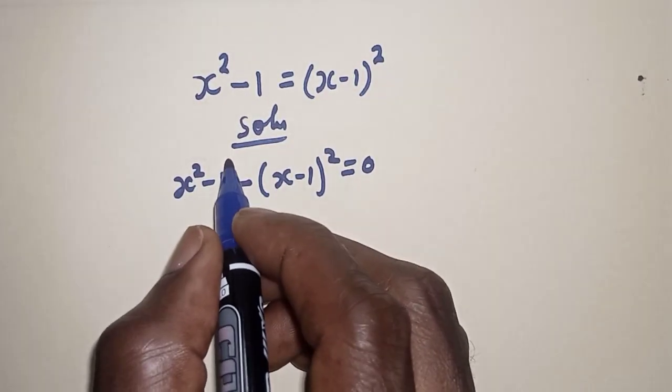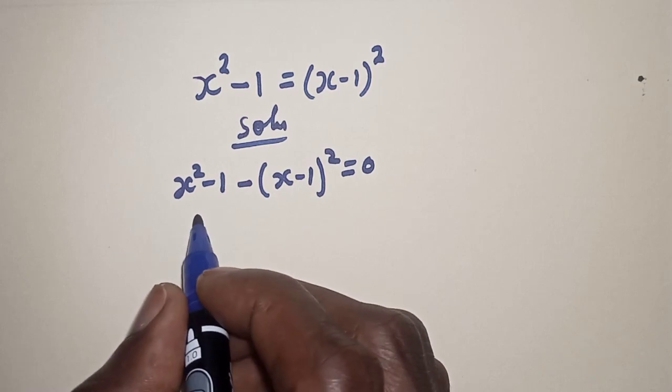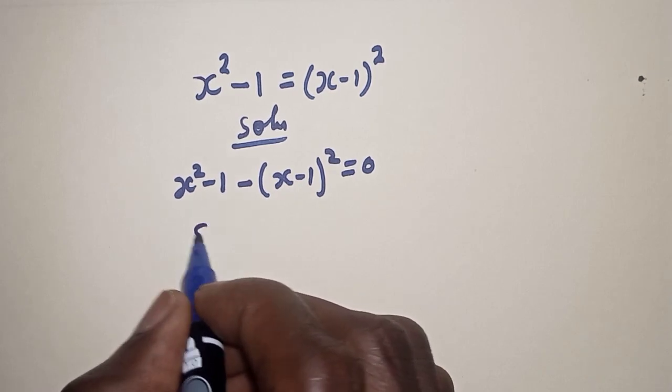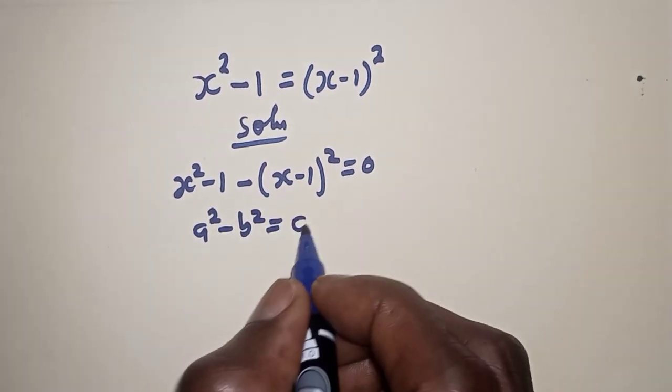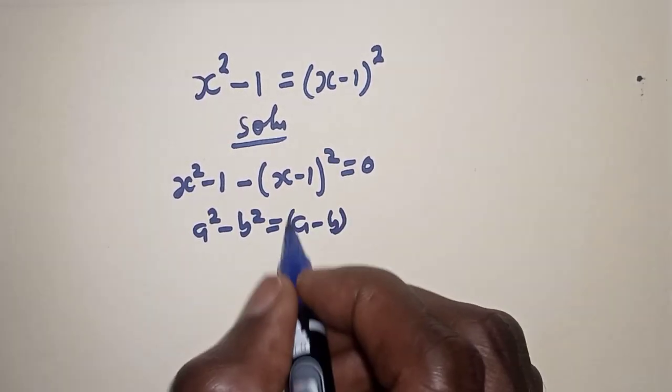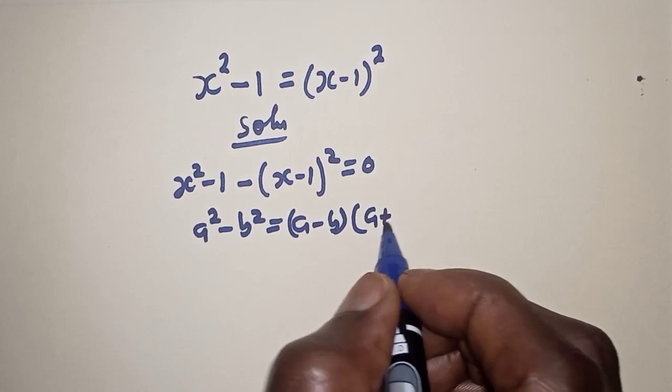This s squared minus 1, take note and remember this rule: a squared minus b squared is equal to a minus b multiplied by a plus b.